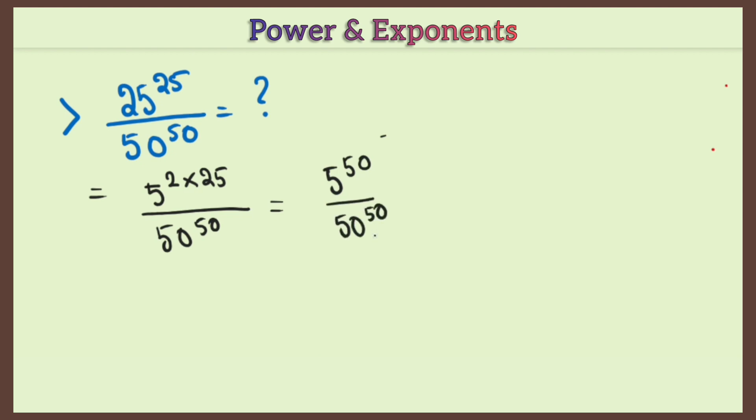Here you see 5 to the power 50 by 50 to the power 50. So now you do one thing: you take 5 by 50, make a full bracket, and then to the power 50. Now you can cancel the inside part.